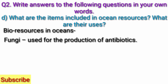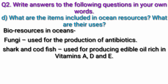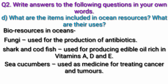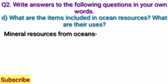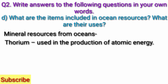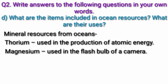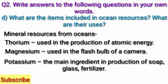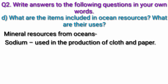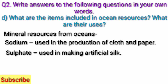Shells are used for preparation of medicines, vitamins, and decorative articles. Fungi are used for the production of antibiotics. Shark and codfish are used for producing edible oil rich in vitamins A, D, and E. Sea cucumbers are used as medicine for treating cancer and tumors. Mineral resources from oceans: thorium — used in production of atomic energy; magnesium — used in flash bulbs of cameras; potassium — the main ingredient in production of soap, glass, and fertilizer; sodium — used in production of clothes and paper; sulfate — used in making artificial silk.